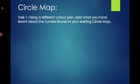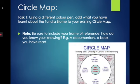Now what I'm going to ask you to do is to go back to the circle map that you started at the beginning of this lesson, where you had to write down what you already know about the tundra. You're going to use a different color pen and add what you have learned about the tundra biome through this presentation. Please make sure to include your frame of reference — what is a frame of reference? This is how do you know your knowing? How do you know this? Please include as many examples as you have.